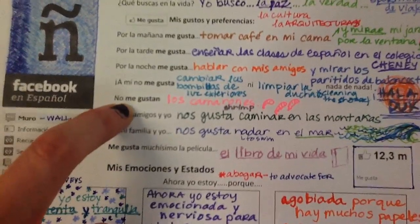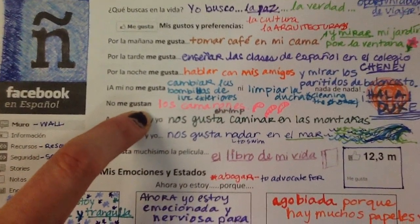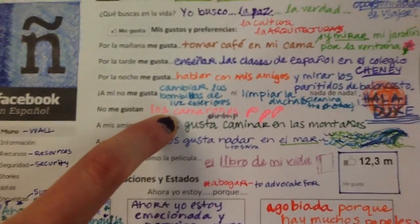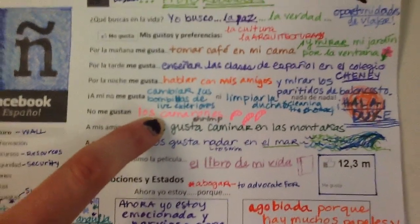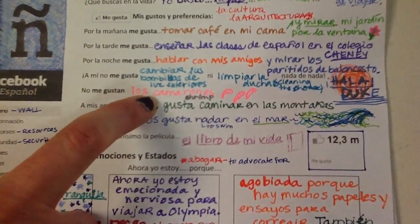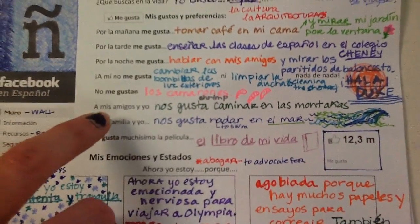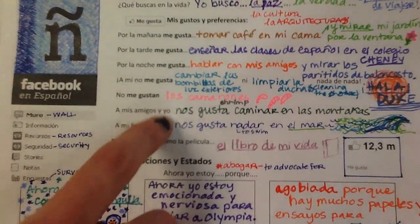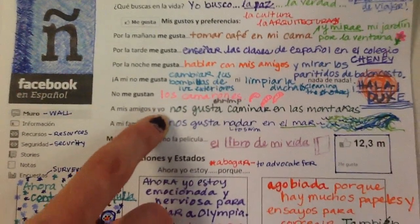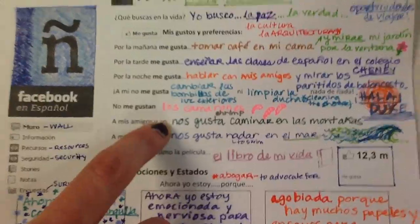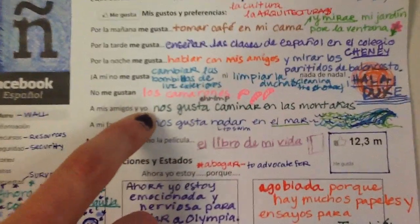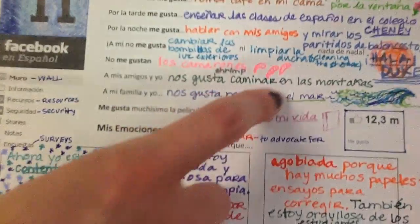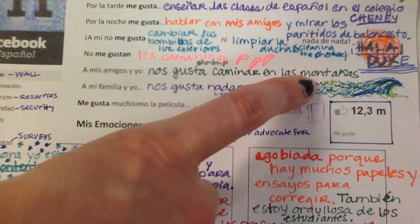Next one: no me gustan — no me gustan is plural. So you have to give me something plural you don't like. I don't like shrimp, so I put no me gustan los camarones. Next one: a mis amigos y yo — my friends and I. Now you have to change your IOP to nos because we're talking about my friends and I. We like to caminar en las montañas — we like to walk, a.k.a. hike, in the mountains.